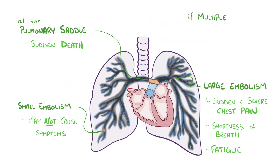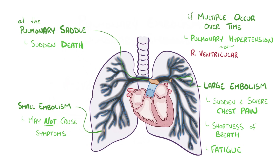If multiple thromboembolisms happen over time, then that can lead to pulmonary hypertension or right ventricular failure, because blocked arteries cause an increase in resistance, which requires the heart to supply more pressure to move blood past the obstructed arteries.